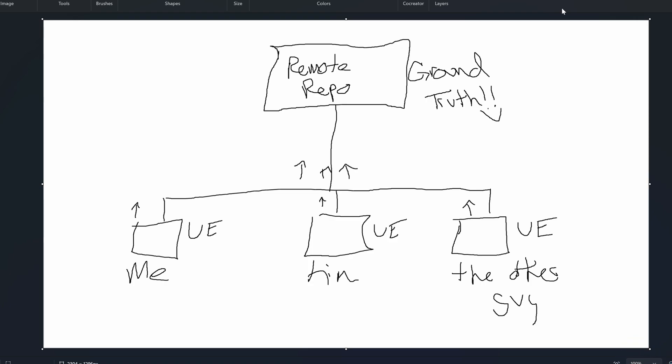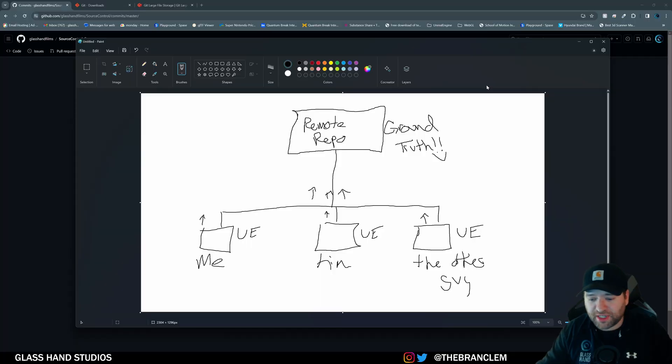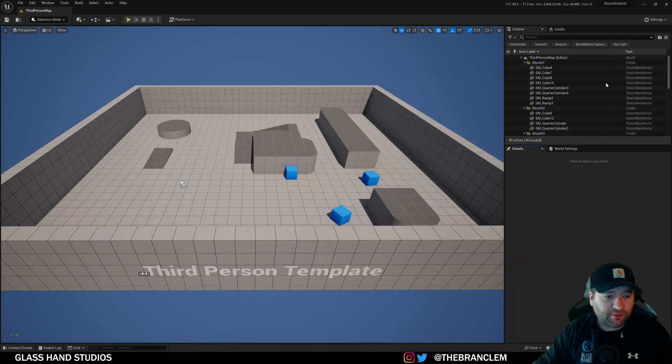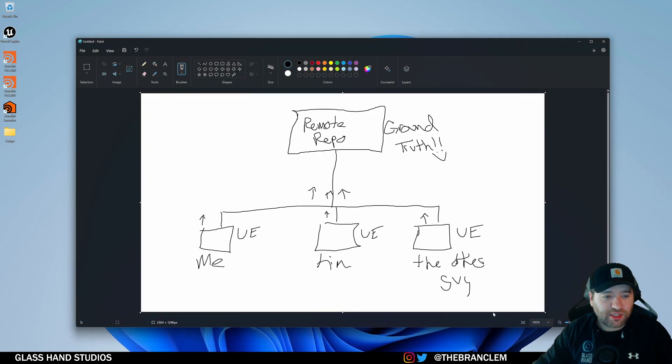We all have to merge our changes into the remote, which is the ground truth of our working game. GitHub servers are going to host your actual ground truth. If anything happens to anyone's local computer it's totally fine — you can work on your laptop, your desktop, whatever. You can always contribute to the ground truth of your project and always revert easily.